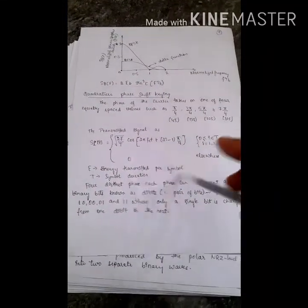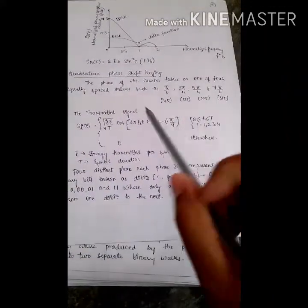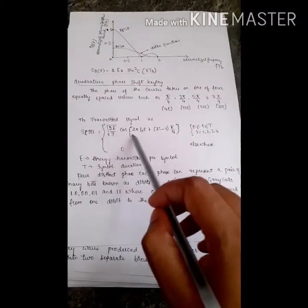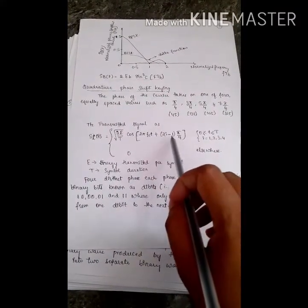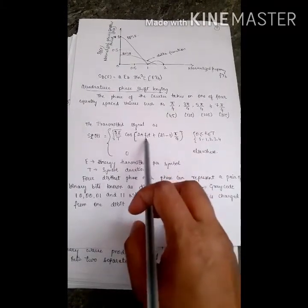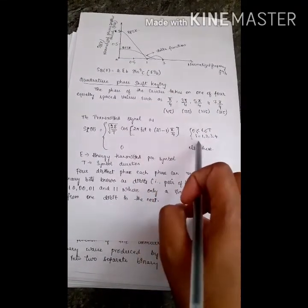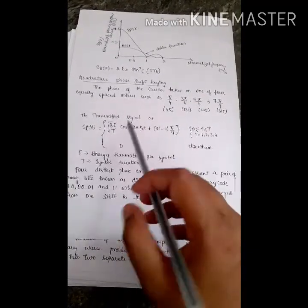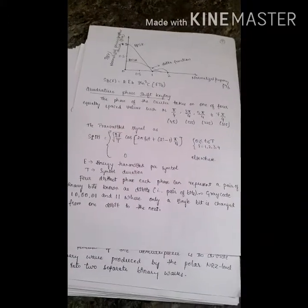The transmitted signal Si(t) is given by: Si(t) = sqrt(2E/T) * cos(2*pi*fc*t + (2i - 1)*pi/4), where t varies between 0 to T, and i varies from 1 to 4, because we are using four carriers. Here, E is the energy transmitted per symbol and T is the symbol duration.